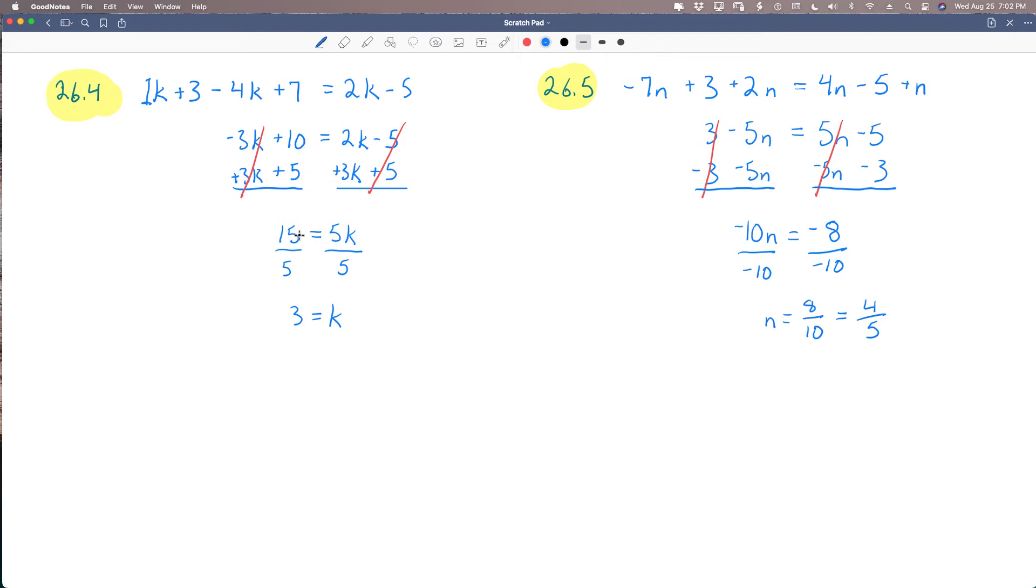And then I did my math. 10 plus 5 was 15. 2 and 3 is 5k. So I divided both sides by my factor of 5 that I knew. So if I divide by 5, I undo the multiplication, then I find out that 3 is equal to k or that k is equal to 3.